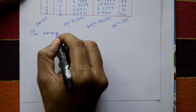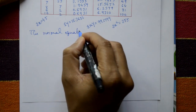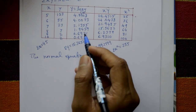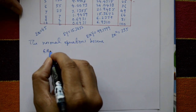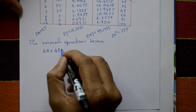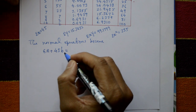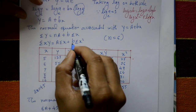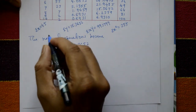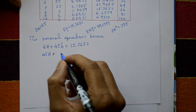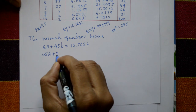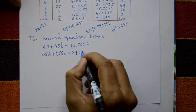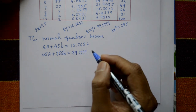Substituting into the normal equations: the first equation becomes 6A + 45b = 15.3652, and the second equation becomes 45A + 355b = 99.1799. Solving these using a calculator.